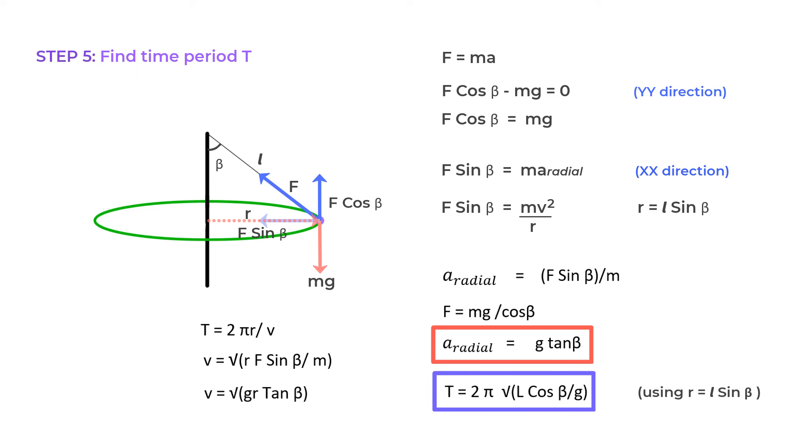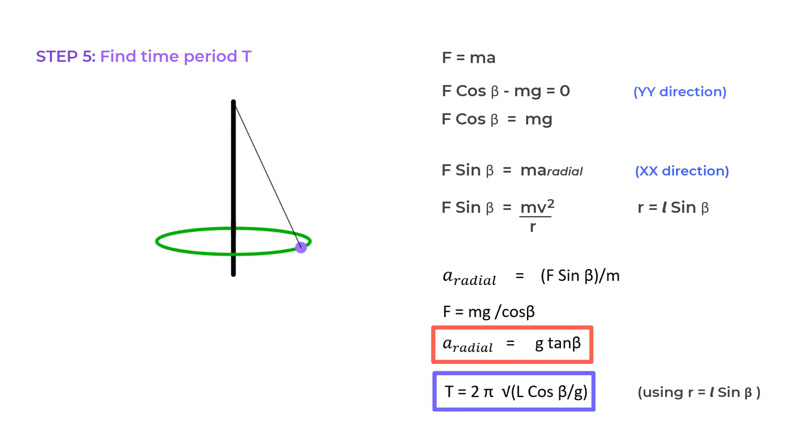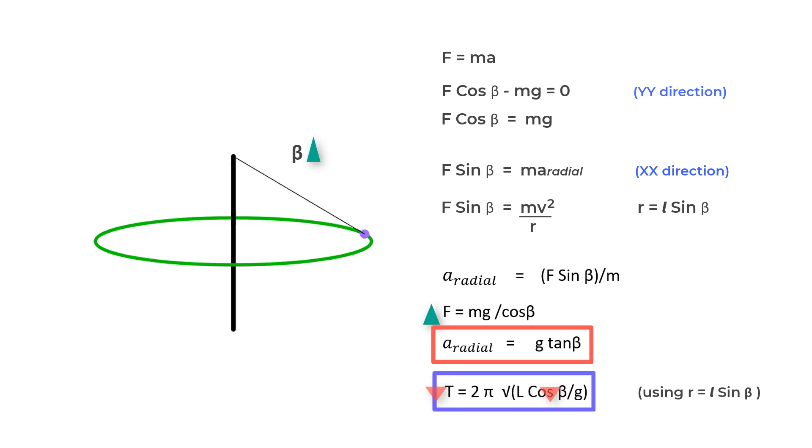So, for a given length L, that is if we keep it fixed, as the angle beta increases, cos beta decreases and the time becomes smaller, and the tension F equals MG upon cos beta goes up.